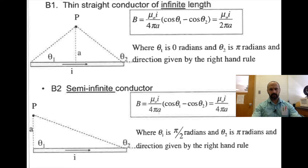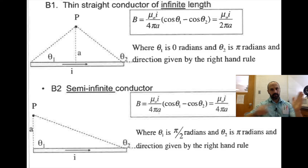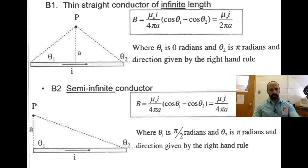That infinite wire formula, μ₀i / (2πa), is a good one to have memorized because we're going to see it quite a bit. For a semi-infinite conductor — where you're at one end and the conductor goes on forever in the other direction — the result is μ₀i / (4πa). That one is also worth remembering.